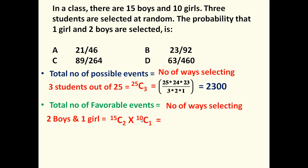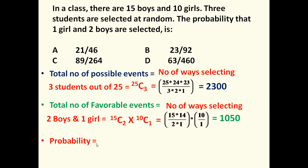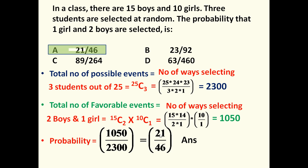Multiplication is used because they are dependent on each other. 15C2 is given by 15 × 14 divided by 2 × 1, and 10C1 is given by 10 divided by 1. This equals 1050. So 1050 are the total favorable events and 2300 are the total possible events. The required probability is 1050 divided by 2300, which simplifies to 21/46. So the answer is option A: 21/46.